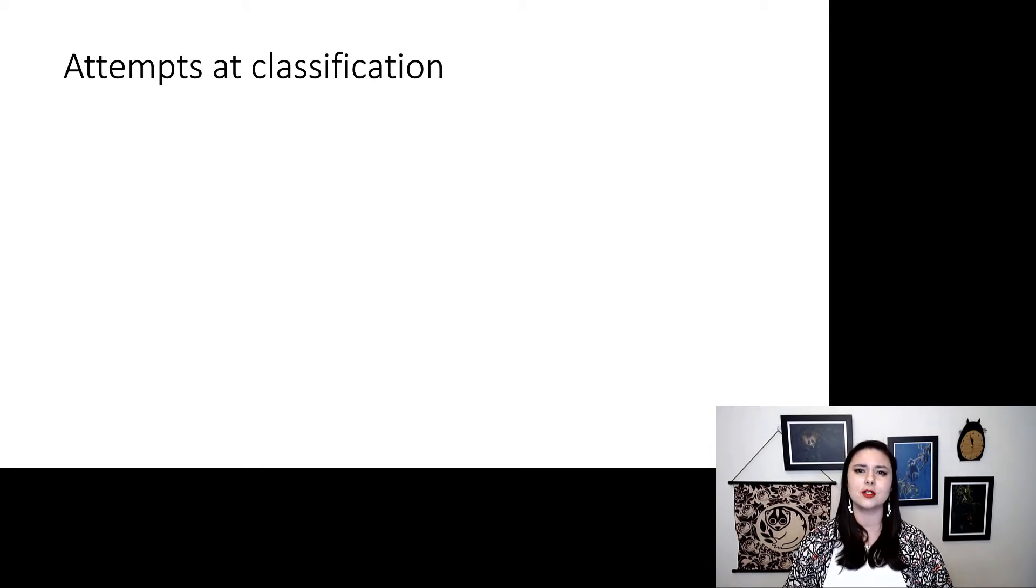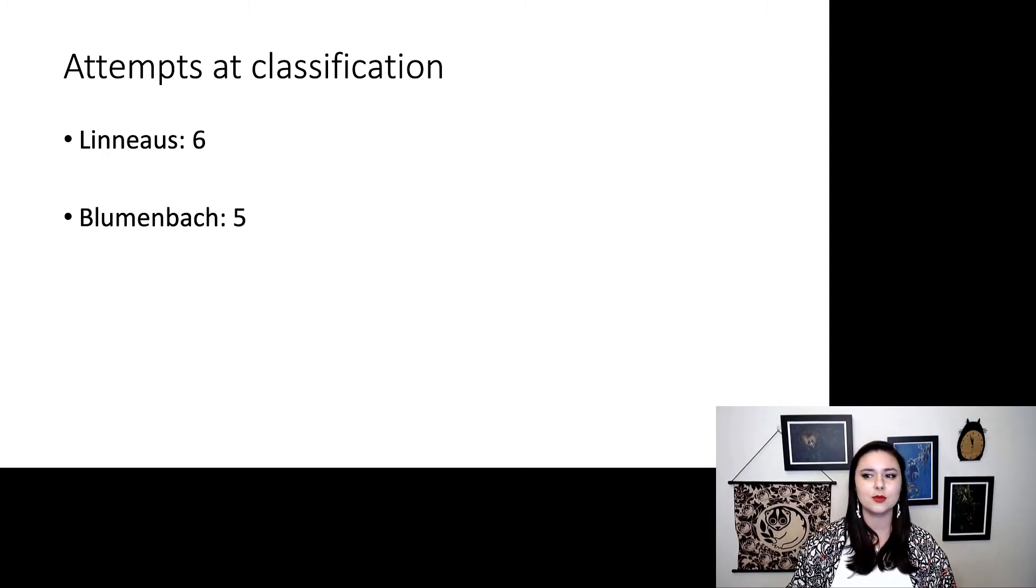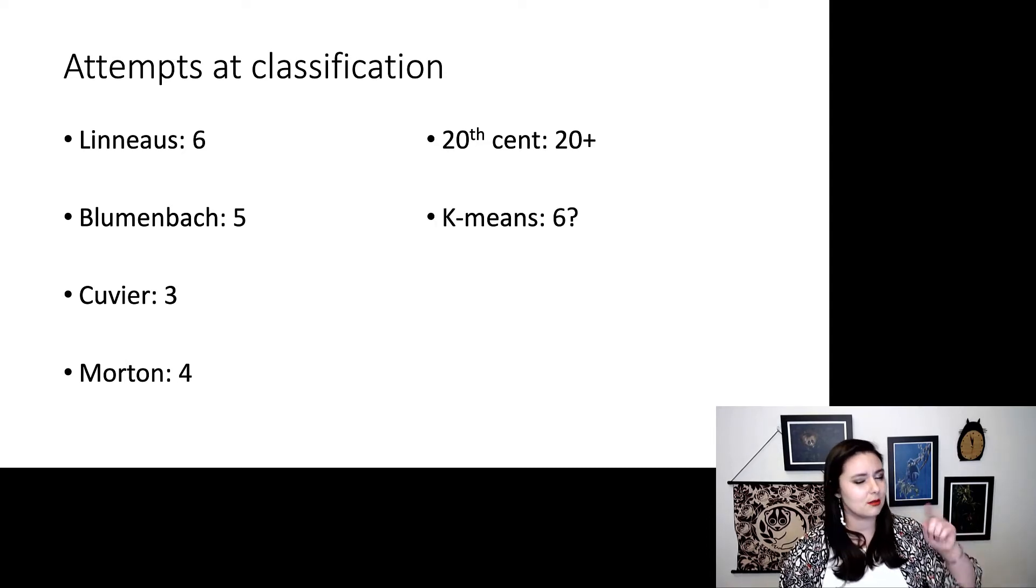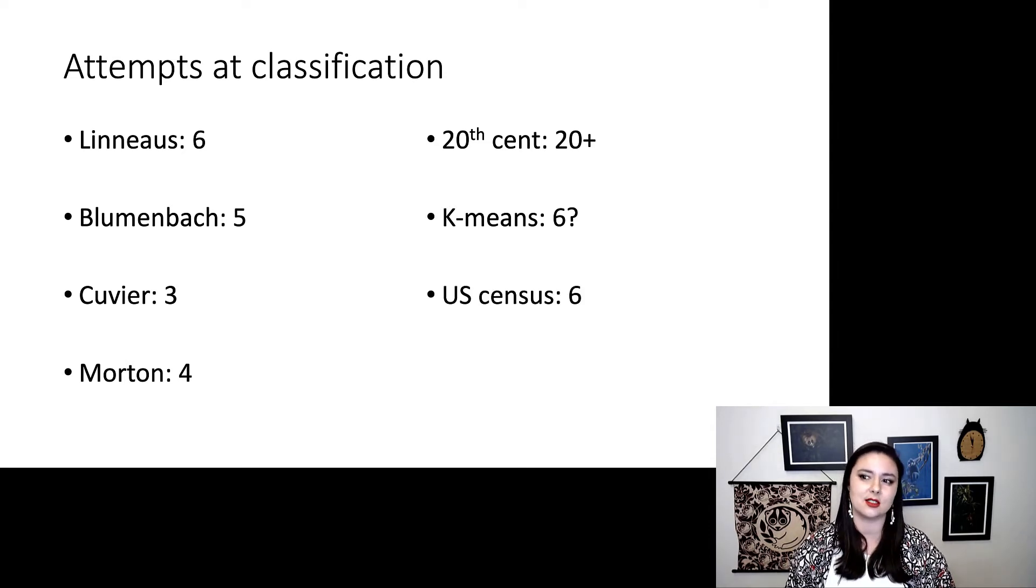So let's remind ourselves some previous attempts to classify humans. Linnaeus had six, Blumenbach had five, Cuvier had three, Morton had four. In the 20th century, there was like 20 or more. K-means analysis are six. Remember, that's not a very good tool for this. And currently the U.S. Census has six different categories.